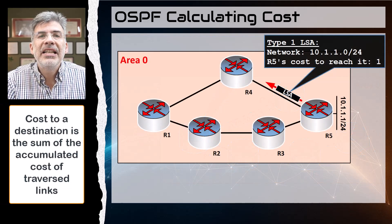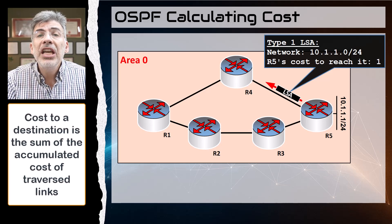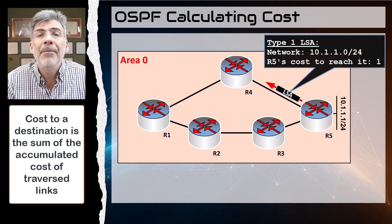That makes sense, right? But how is that cost value of three determined? The cost to reach a particular destination is measured based on the accumulated cost of each individual link that must be traversed to reach it.